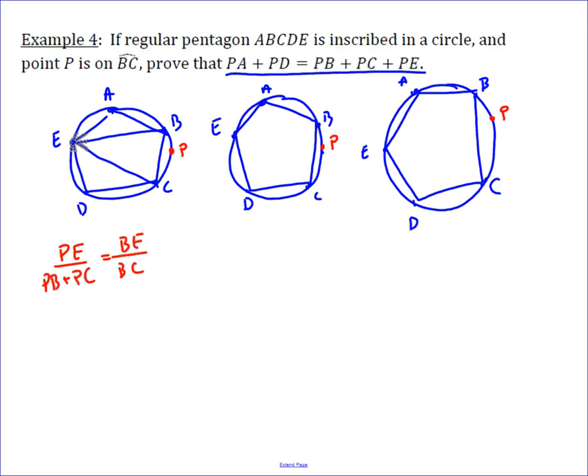the length of the leg over the length of the base. So we get PE over PB plus PC equals BE over BC. If you cross multiply, which is what we're going to need, you end up with PE·BC = BE(PB+PC). That's our first step using the theorem we proved previously.